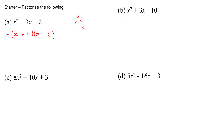Part b: similar sort of thing, again no coefficient of x squared, so we open our brackets with x times x. The minus 10 — I've got to look for factors of minus 10 that give me 3. Now 2 and 5 come to mind straight away because 5 take away 2 gives me 3. So it's going to be x minus 2 and x plus 5.